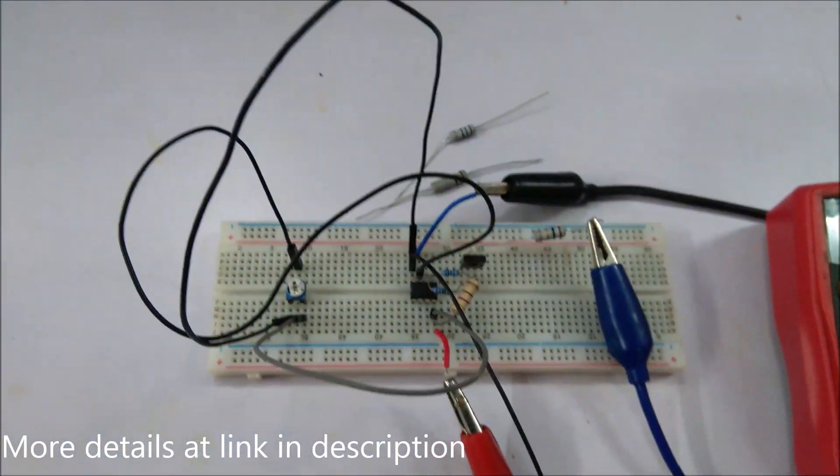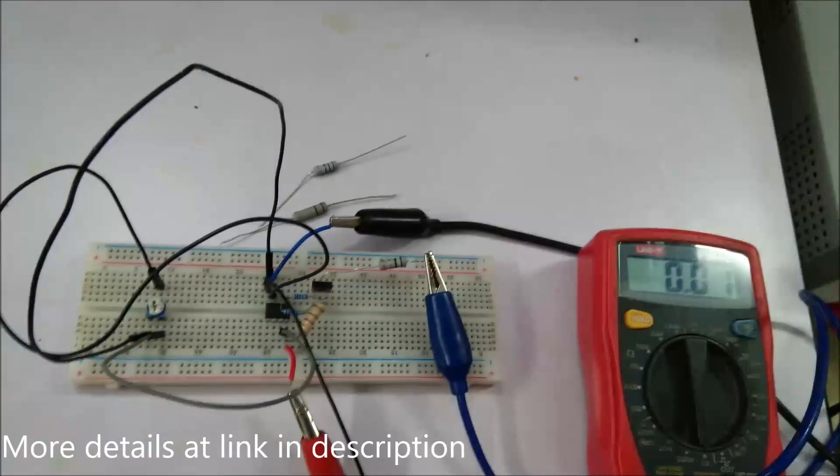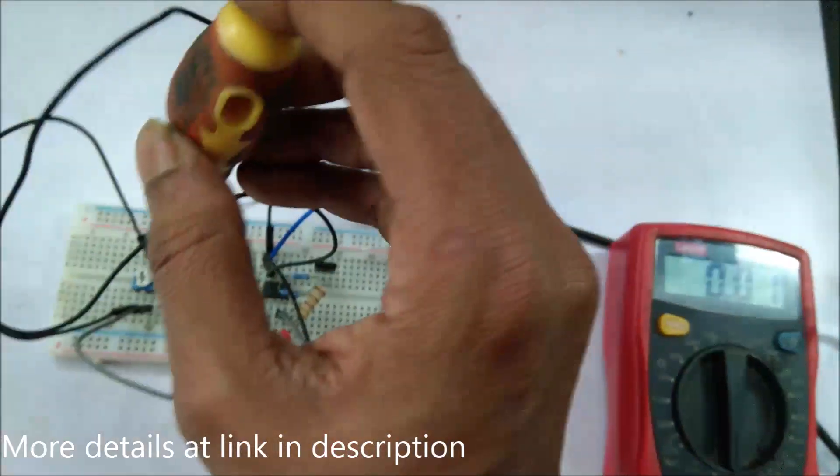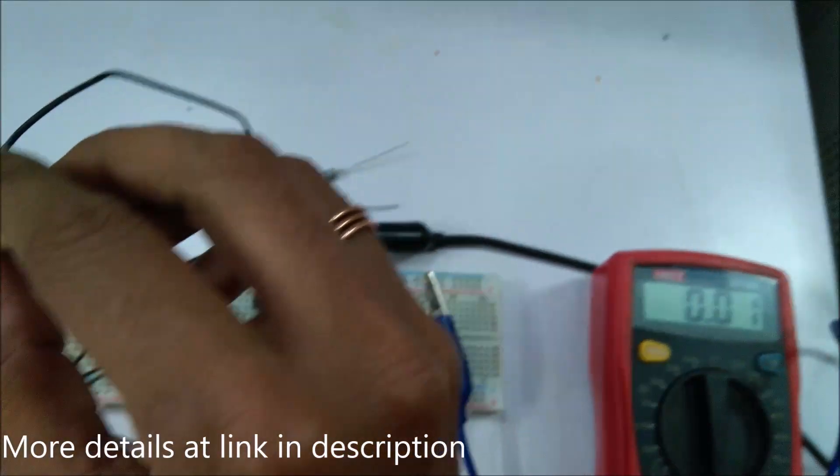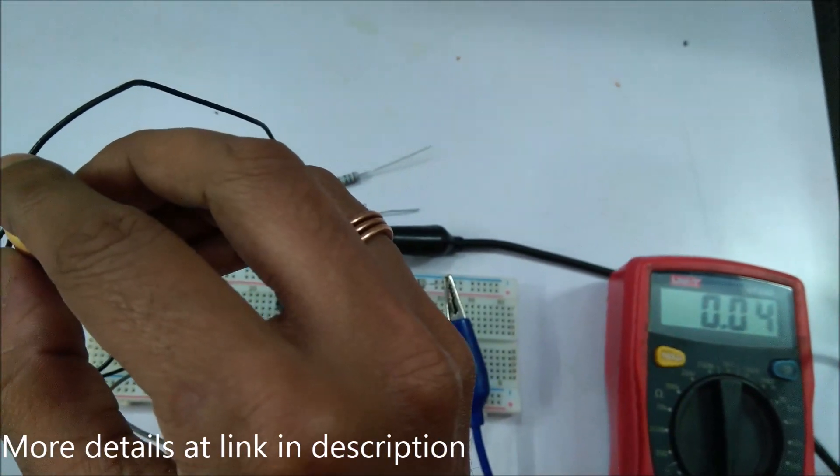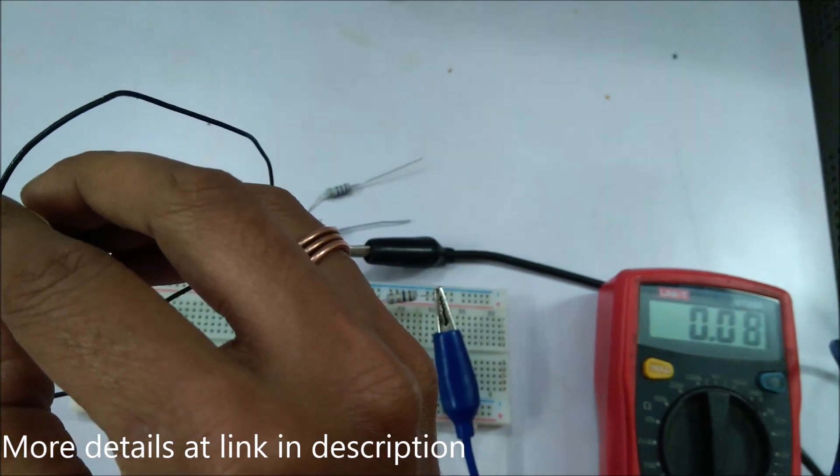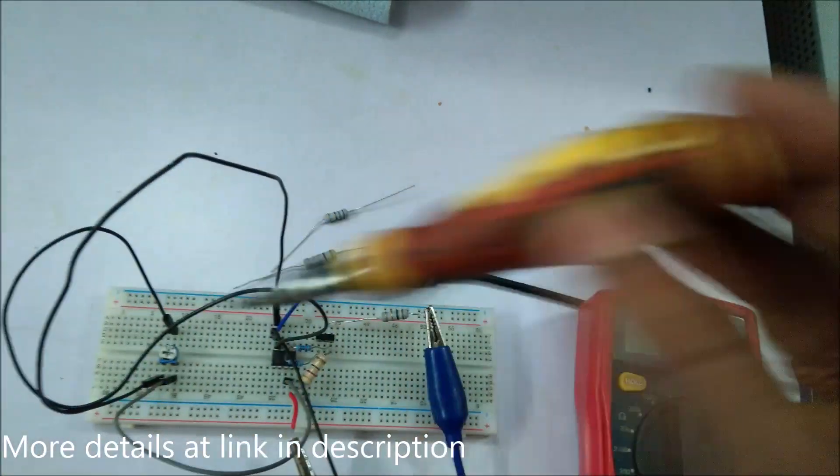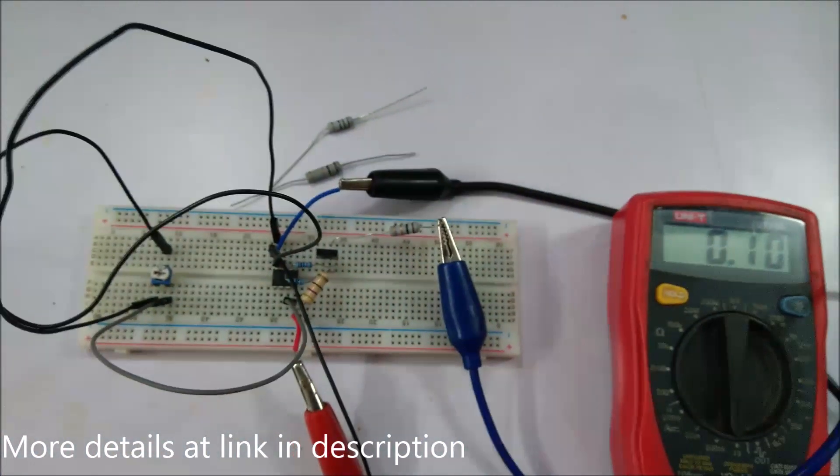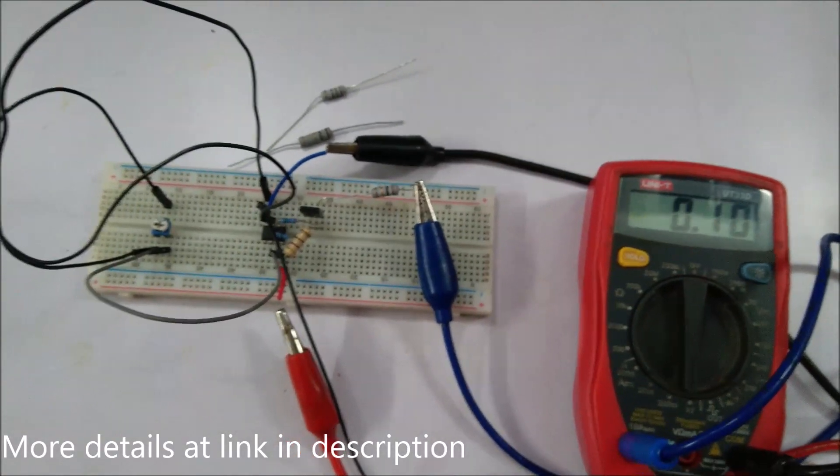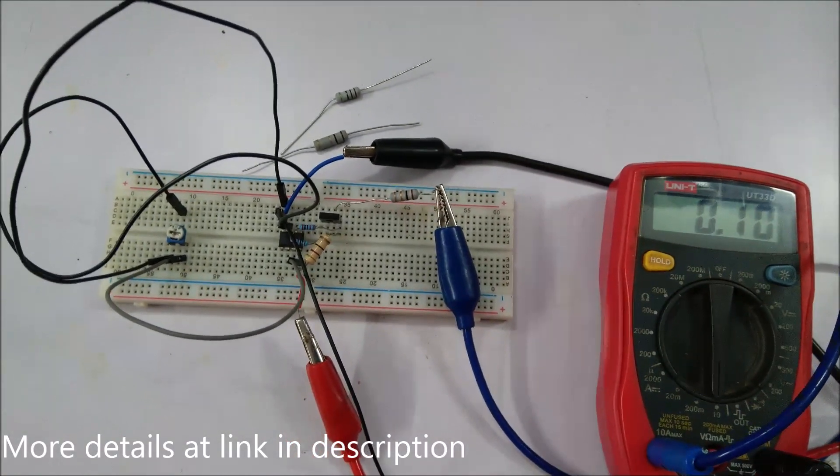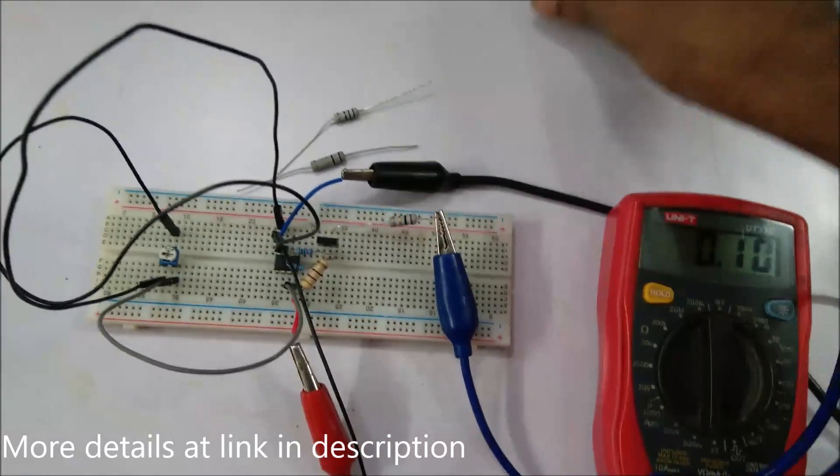So let's see how this is going to work. So let me set the constant current via a voltage divider. I have set the limit to 100 milliamperes, that is 0.1 ampere. So this load resistor is getting constant current of 100 milliamperes.